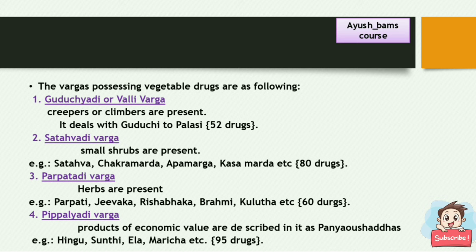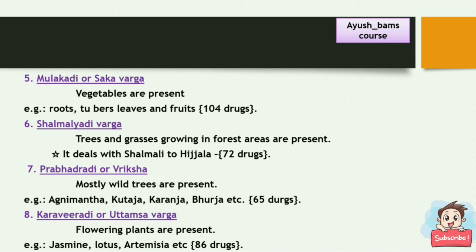Pippalyadi Varga describes products of economic value as Pancha Aushadas — for example, Hingu, Ela, Shunti, Maricha, etc. — total 95 drugs. Moolakadi or Shakha Varga contains only vegetables such as roots, tubers, leaves, and fruits — total 104 drugs. Shalmalyadi Varga contains trees and grasses growing in forest areas, mainly from Shalmali to Hijala — total 72 drugs. Prabhadhadi Varga or Riksha Varga mostly contains wild trees such as Agnimantha, Kutaja, Karanja, Bhurja, etc. — total 65 drugs.